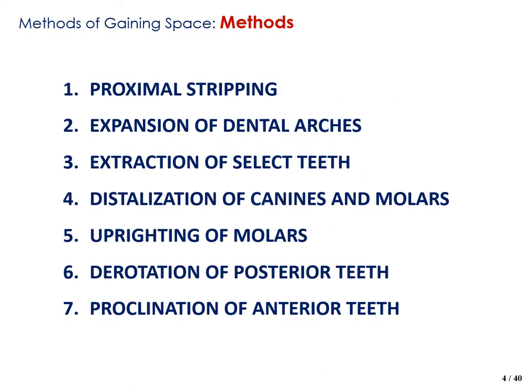What are the different methods used in gaining space? There are seven methods: proximal stripping or interproximal reduction, expansion of the dental arches, extraction of select teeth, distalization of canines and molars, uprighting of molars, derotation of posterior teeth, and proclination of anterior teeth. These are all different methods you can use to gain space so that the teeth are placed ideally within the dental arches.